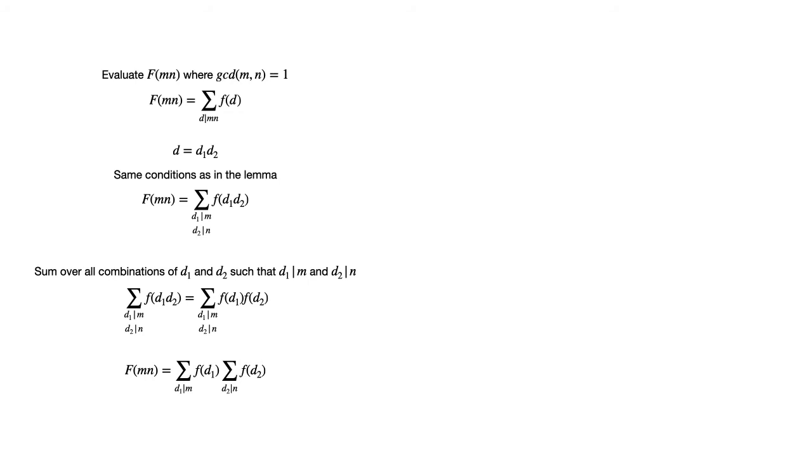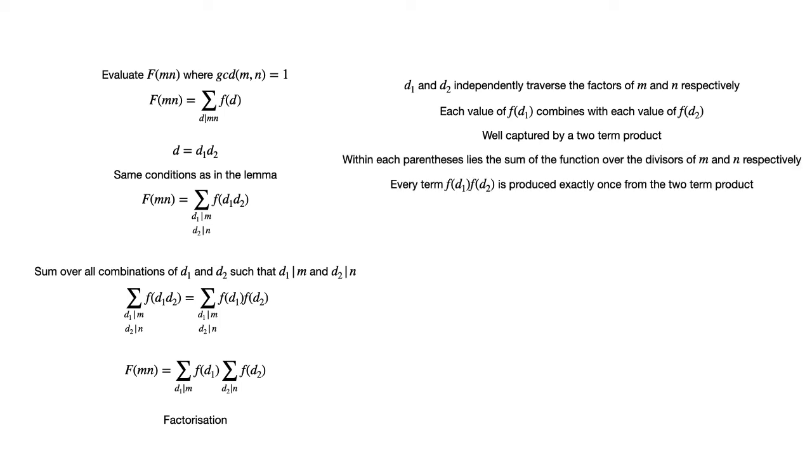Here we split the sum and write capital F of mn equals the sum as d₁ divides m of little f of d₁ multiplied by the sum as d₂ divides n of little f of d₂. This is essentially a factorization as d₁ and d₂ independently traverse the factors of m and n respectively. More importantly, each value of little f of d₁ combines with each value of little f of d₂. Hence this idea of every term combining with every other term is well captured by a two term product. Within each parenthesis lies the sum of the function of the divisors of m and n respectively and every term little f of d₁ into little f of d₂ is produced exactly once from the two term product. Thus the factorization we have written is entirely valid.